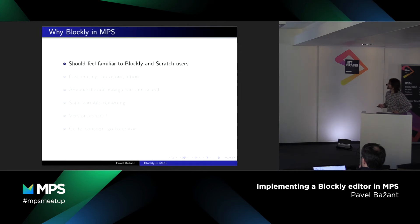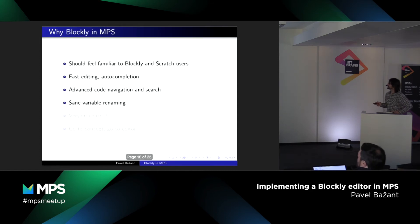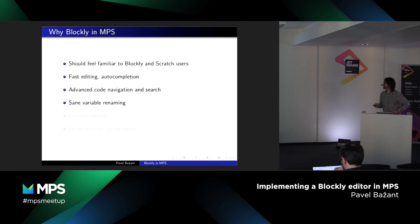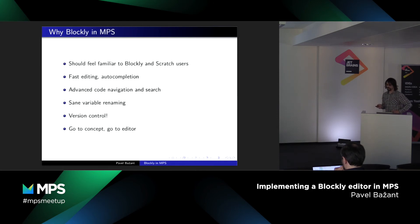So why should Blockly feel familiar to Blockly users? You get faster editing, autocompletion, advanced code navigation and search, and sane variable renaming. It turns out that variable renaming in languages generated by Blockly is by default seriously broken — if you have two variables in different scopes, Blockly just renames both of them. Version control would also be nice to have, along with go-to-concept and go-to-editor so you can inspect the language behind the program.